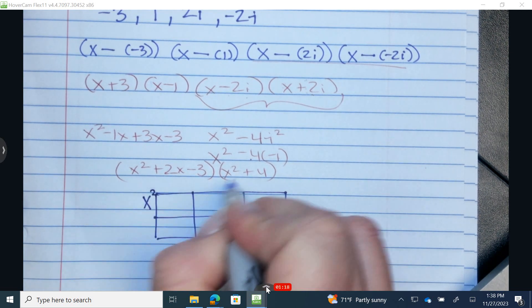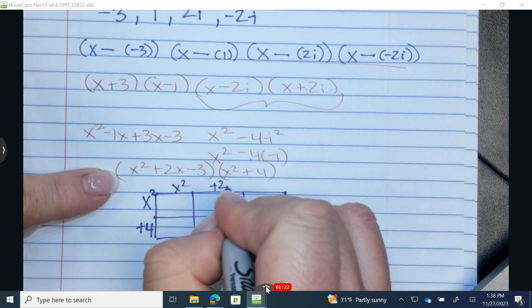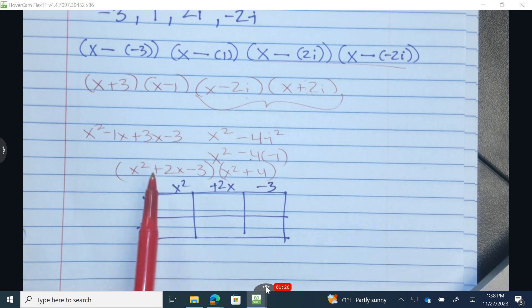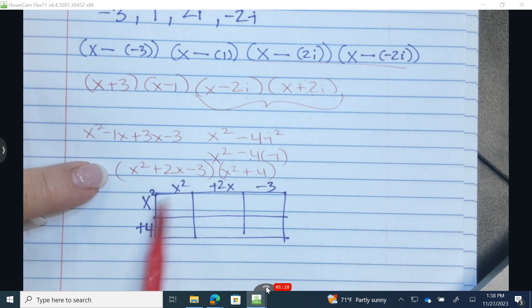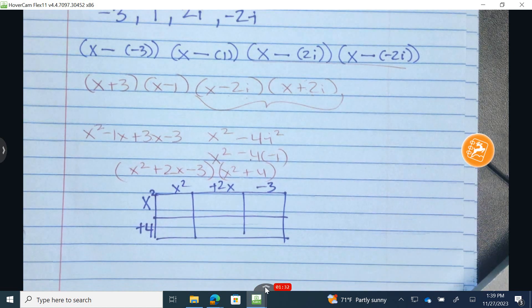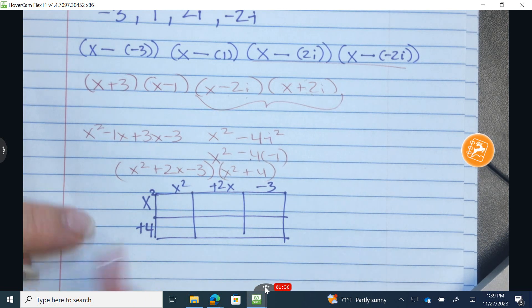We have x squared and a positive 4. x squared, positive 2x to the negative 3. Three terms are on top, two terms are on the left. All right, this is an alternative to distributing six times.